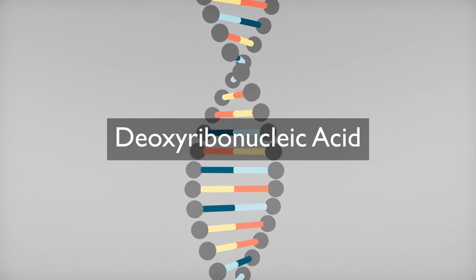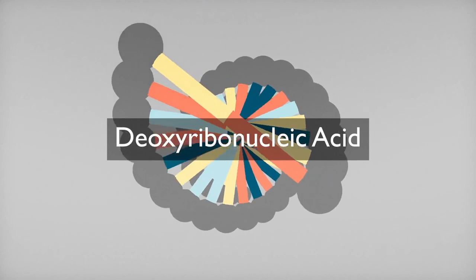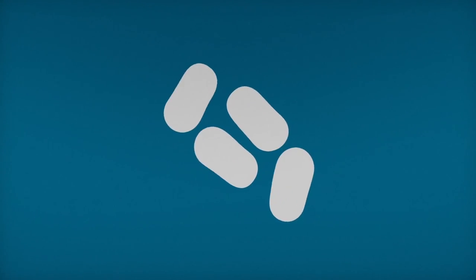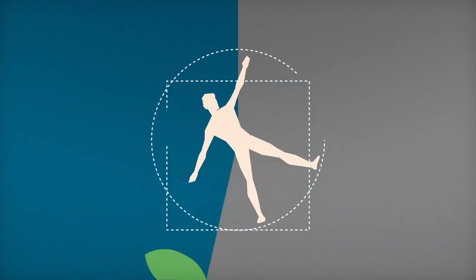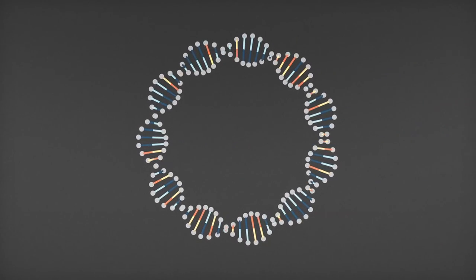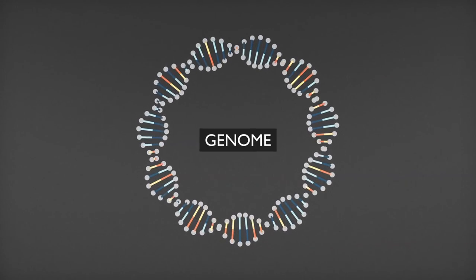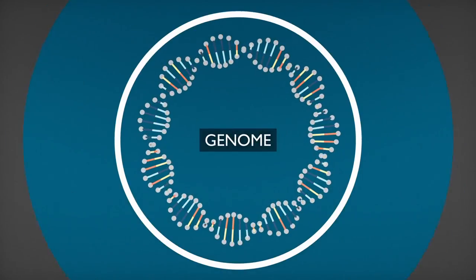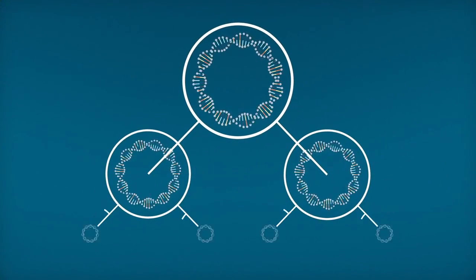DNA is the instruction manual for how to build life. From microbes to plants to human beings, it defines us all. The complete set of instructions encoded in an organism's DNA is called its genome and is passed from parent to offspring during reproduction.